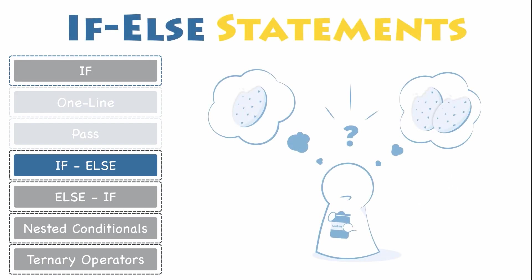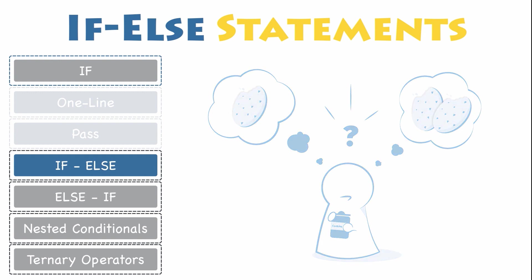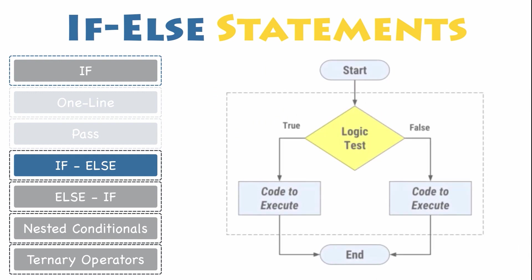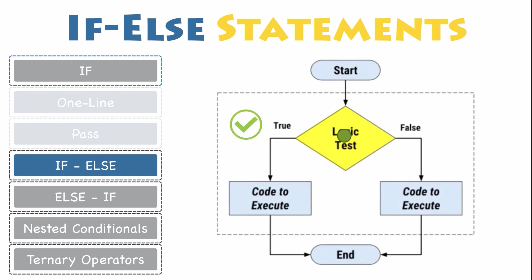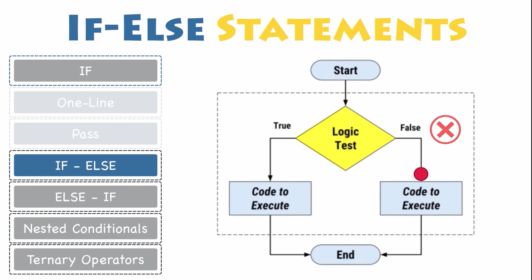If-else statements. You know how to use an if statement to conditionally execute a single statement or a block of several statements. It is now time to find out what else you can do to control the execution flow of your program. Sometimes you want to evaluate a condition and take one path if it is true, so that one thing or more can happen, but specify an alternative path when it is not and something else happens.